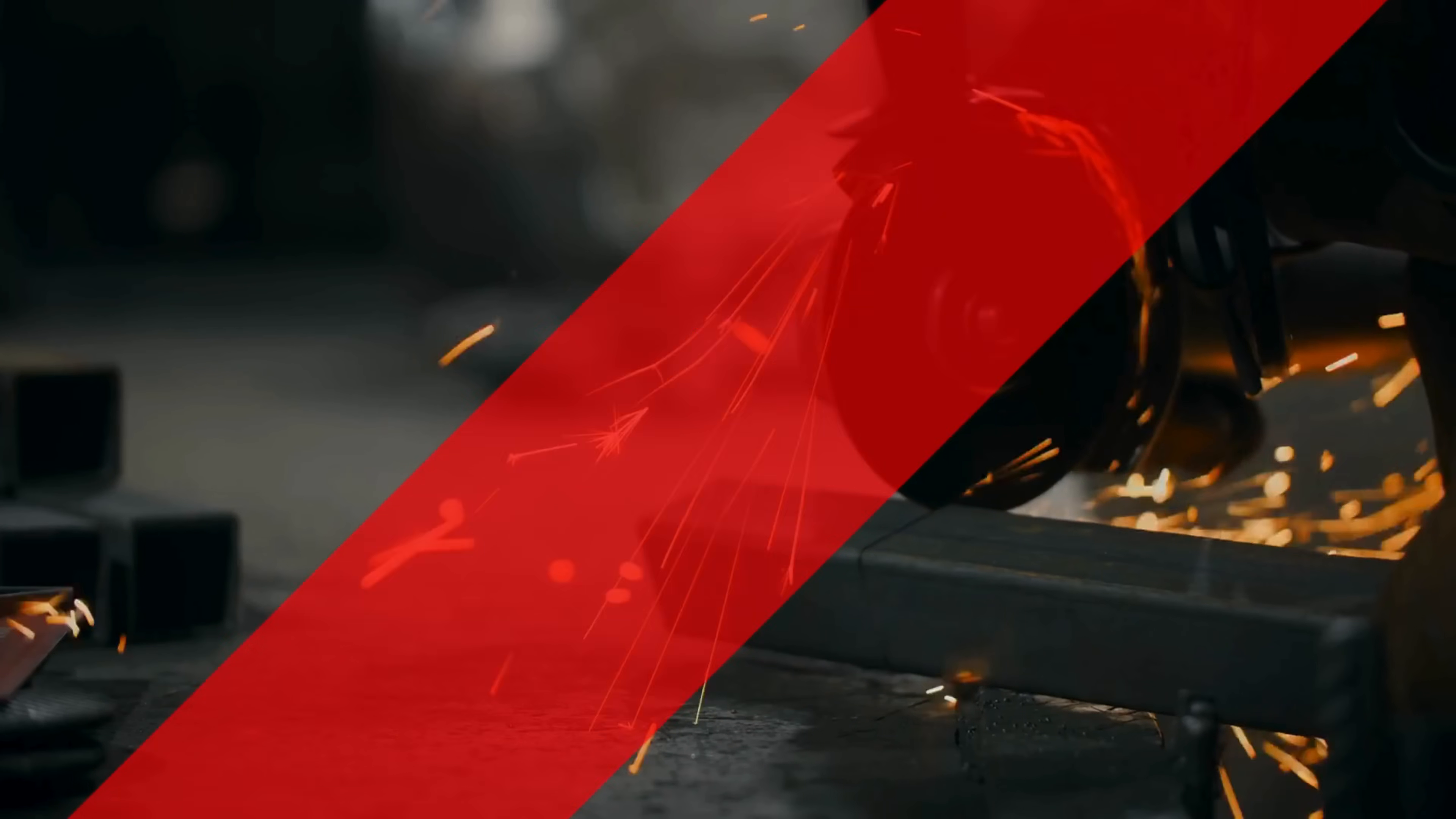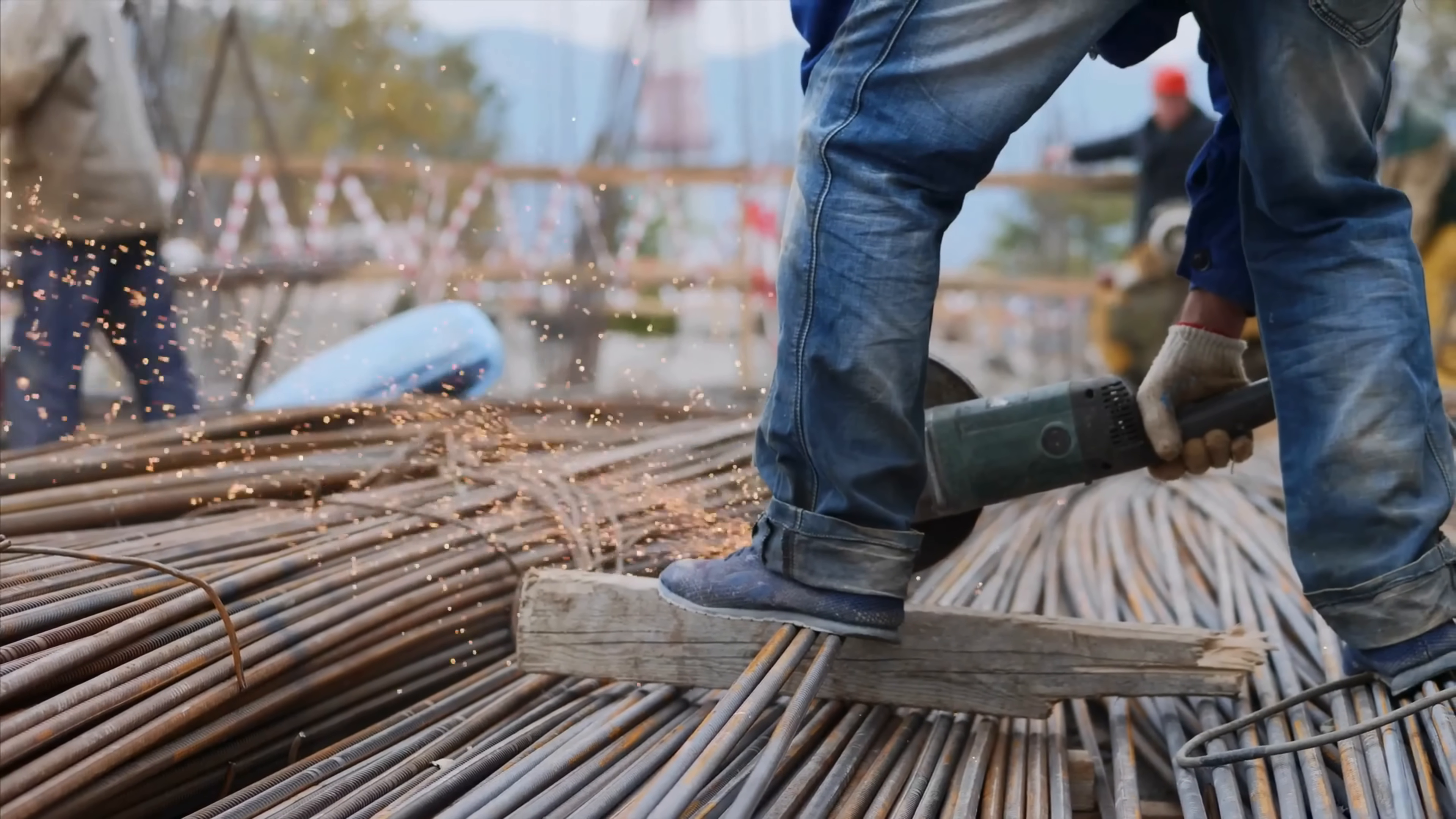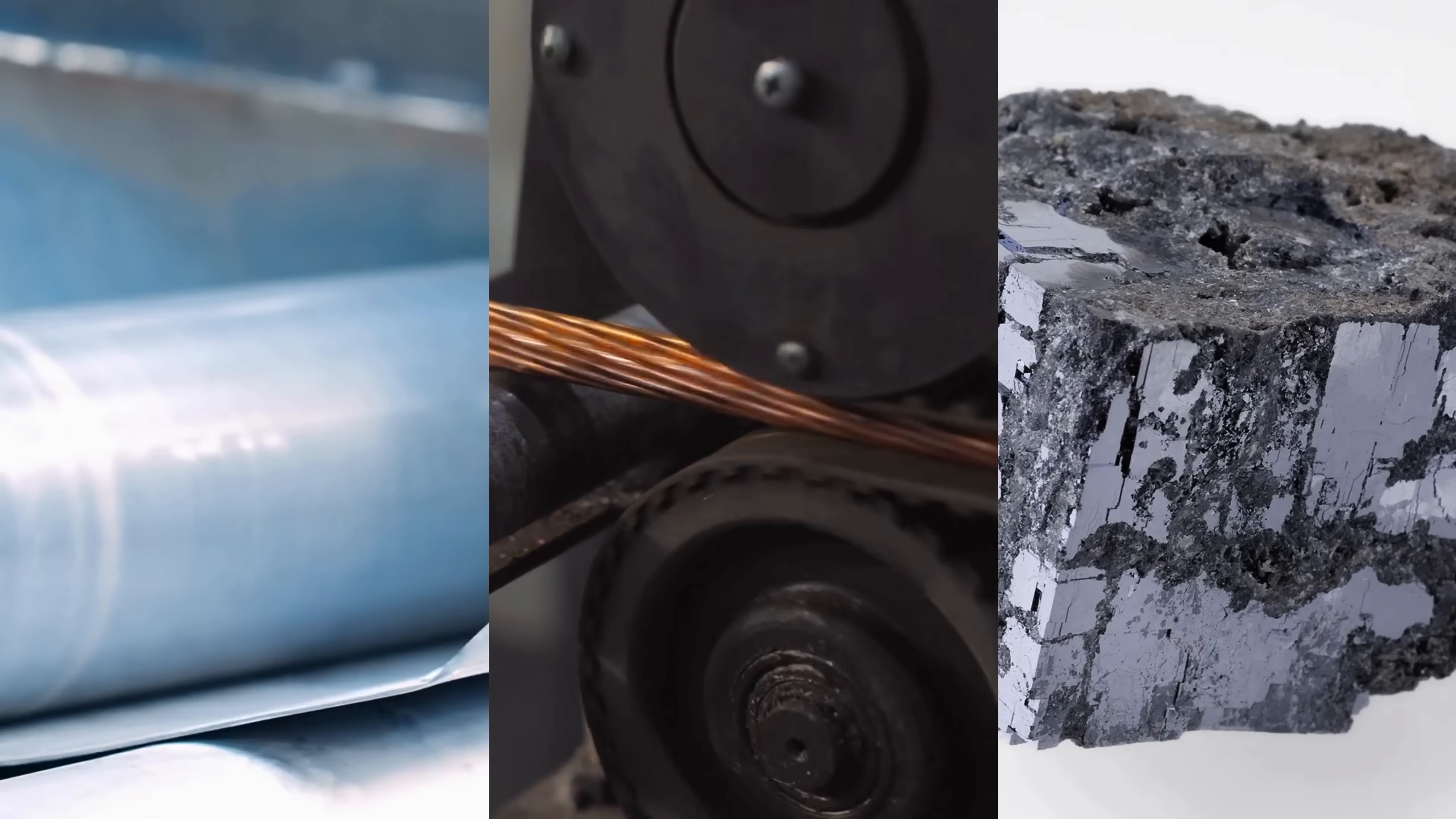Interestingly, not all metals spark when cut with a grinder. Iron and steel are particularly prone to sparking because of their oxidation properties and high melting points. In contrast, metals like aluminum, copper, and lead do not produce sparks in the same way.